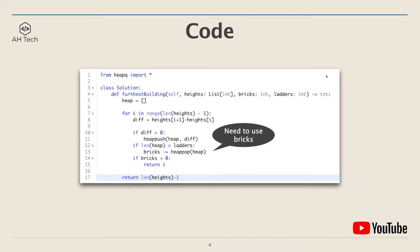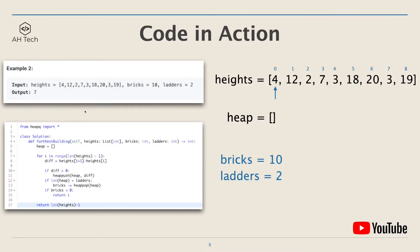Now let's see the code in action, looking at example two. For this height array we have 10 bricks and two ladders. Starting from index zero, going to index one we have a positive height difference, so we push the height difference of 8 into the heap. At index 2 it is a negative height difference, so we can just jump down from building 1 to building 2.